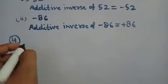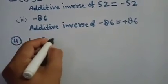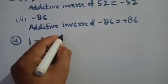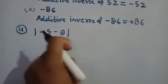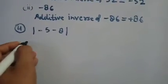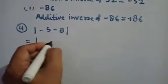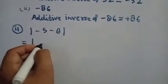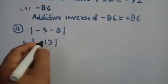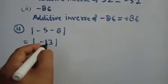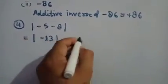Question number 4: Find the value of |minus 5 + minus 8|. Both integers are inside the same absolute value sign, so first you solve the value of minus 5 plus minus 8, which equals minus 13. Now find the absolute value of minus 13, which is 13.